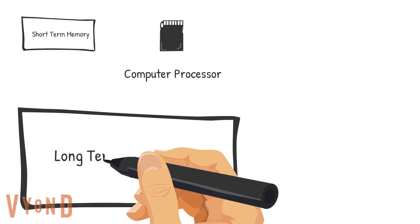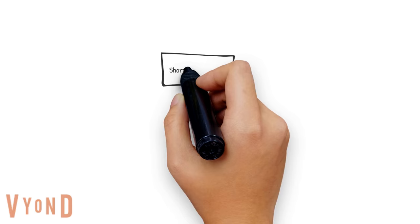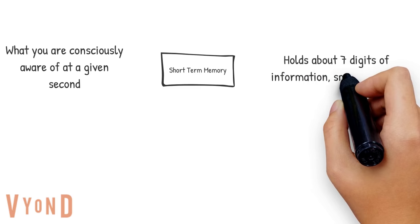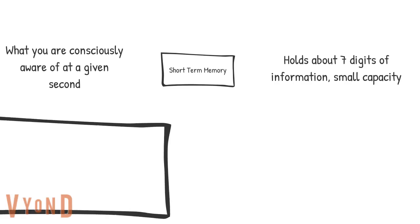Short-term memory is what you're aware of at this very second. So if you're watching this video, my voice right now and the picture on the screen is in your short-term memory. On average, you can hold about seven digits of information in your short-term memory, so your short-term memory does not hold a lot of information — the capacity is very small.